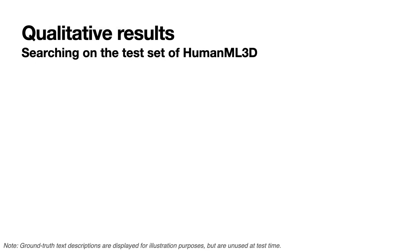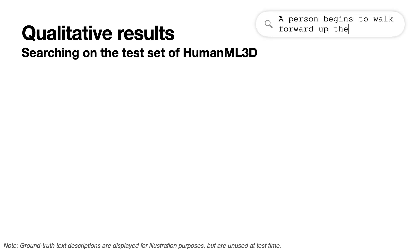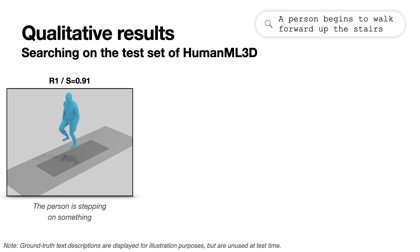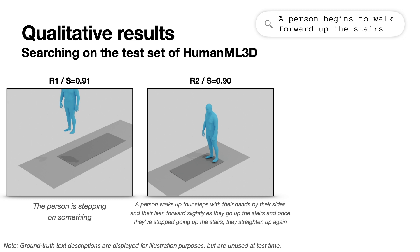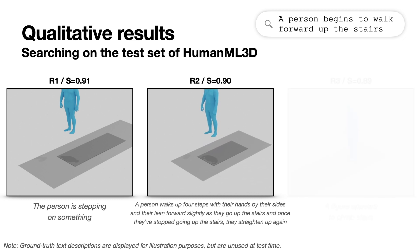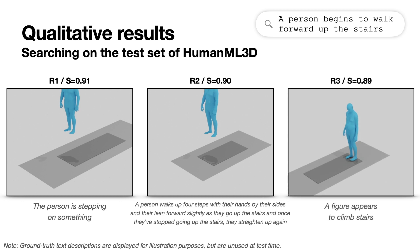Let's see some qualitative results of our model. By taking the HumanML3D test set as a motion gallery and with the text query 'a person begins to walk forward up the stairs,' the model is able to correctly find motions which match with the text. The text descriptions below are for reference only and are not used for this task.